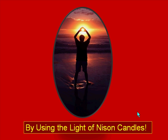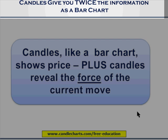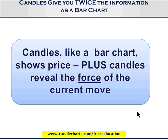The answer is with the light of Nissen candles. I call them Nissen candles because there's so much candle information out there, and a lot of it is well-intentioned but incorrect. What do I mean by the light of Nissen candles? How can we use the insights of the candles? The real focus is using the information shown by the title of the slide: candles give you twice the information of a bar chart. Candlesticks, like a bar chart, both show the price — but the real power, the real potency, the real insight is the second aspect: the candles reveal the force, or the lack of force, behind the move.